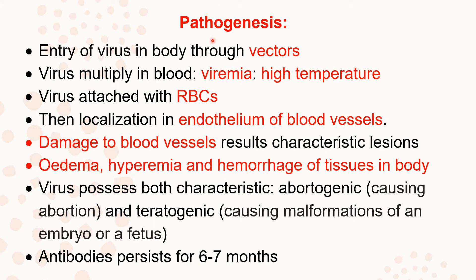Here we will see pathogenesis. If you understand the pathogenesis, it is easy to understand the clinical findings and the severity of manifestations. First, there is entry of the virus into the body through culicoid vectors. The virus rapidly multiplies in the blood and creates a state of viremia. When there is viremia, the animal manifests high temperature. The virus attaches to red blood cells.